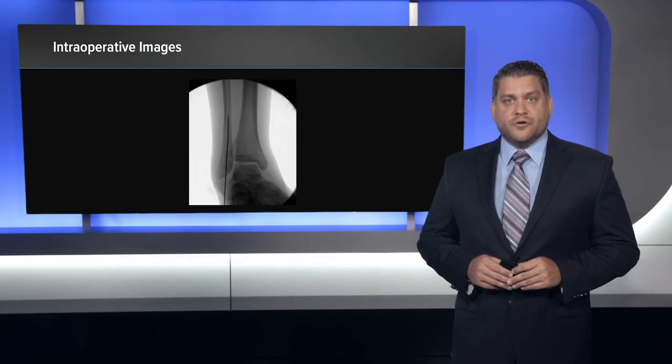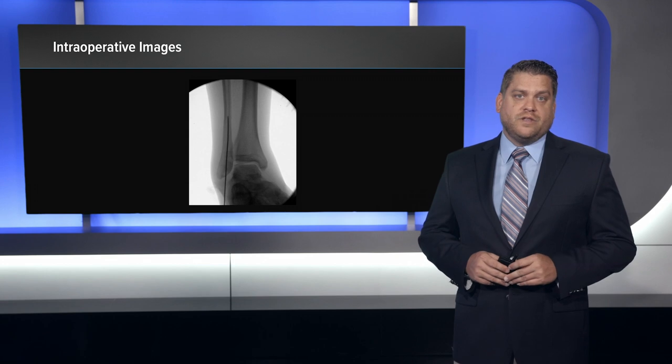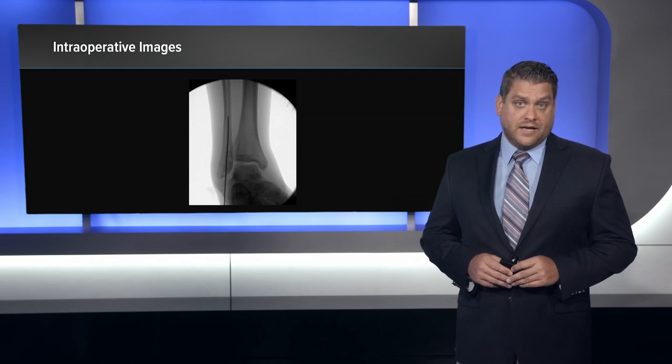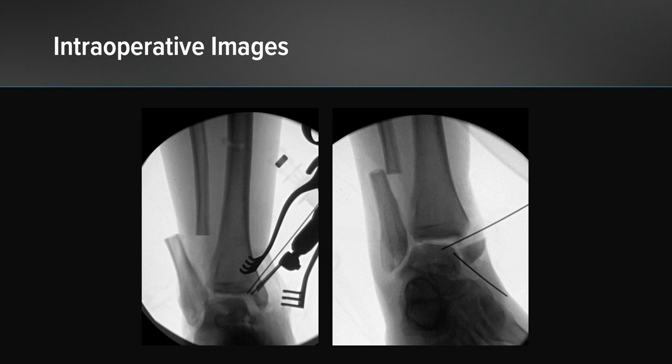Here we have the first portion of the procedure, which is planning for the fibuloc nail later in the case. We use the guide wire to establish the trajectory for the fibuloc nail, pre-drill for it, and ensure that the nail sits in an appropriate position before proceeding with opening the lateral and medial aspects of the ankle.